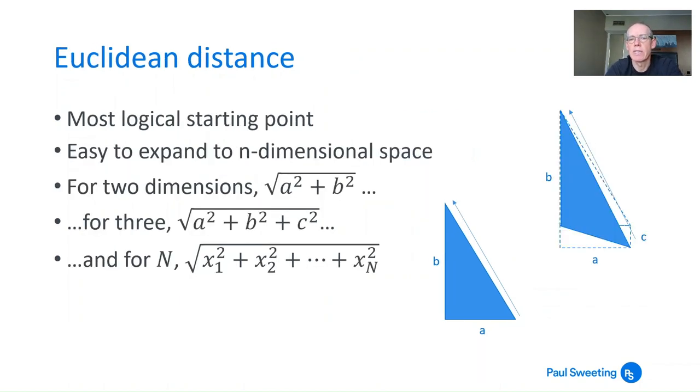So Euclidean distance, as I say, is the most logical starting point. It's easy to expand to n-dimensional space. In two dimensions, it's the square root of a squared plus b squared. For three dimensions, which I've just about drawn a diagram for, it's a squared plus b squared plus c squared. You can generalize it to n dimensions: for n dimensions, it's the square root of x1 squared plus x2 squared all the way up to xn squared. That gives you the Euclidean distance across n dimensions, which sounds like a sensible way of measuring distance.